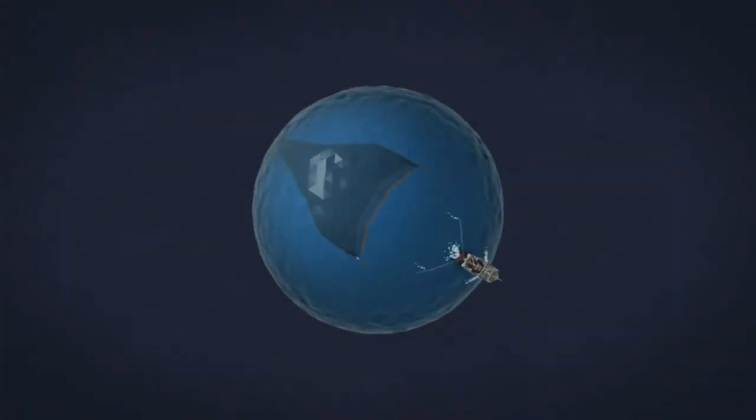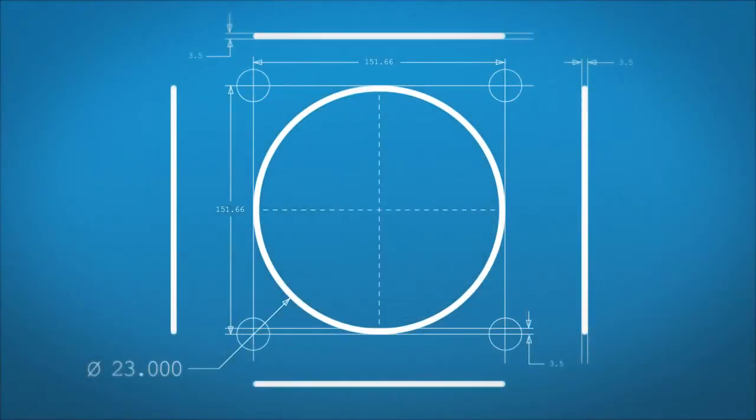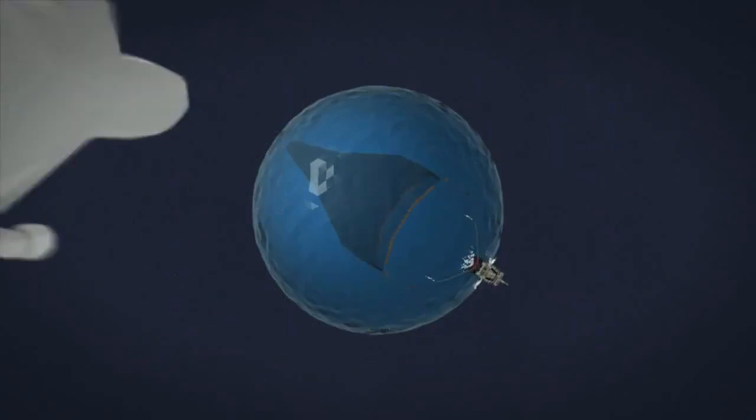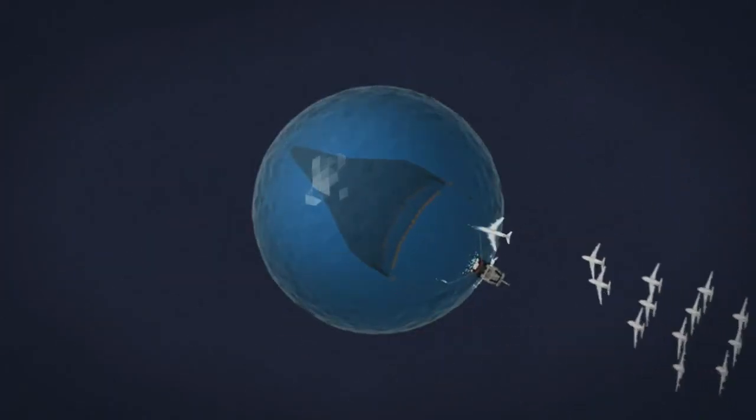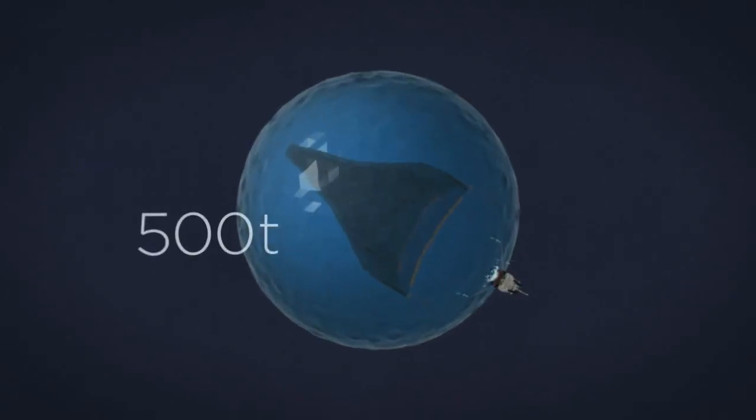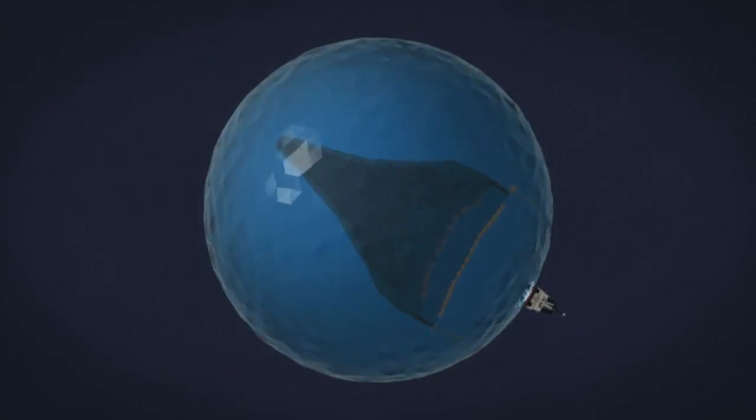There are trawling vessels that cast nets with an opening of up to 23,000 meters squared, the size of four football pitches, and big enough to hold 13 jumbo jets, or more commonly, more than 500 tons of fish.